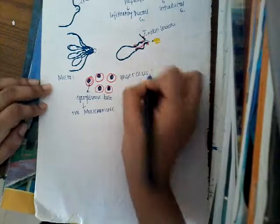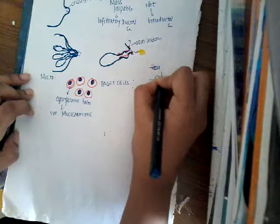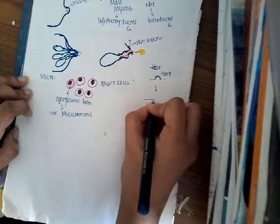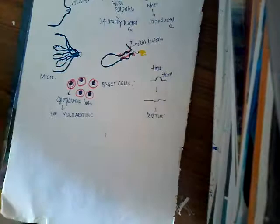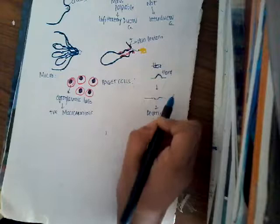Regarding clinical features — because there is a skin lesion, you see a hard nodule. This hard nodule slowly ulcerates and this will destroy the nipple, causing destruction. You see a hardened nodule which will ulcerate. These are the different clinical features you see in Paget's disease.